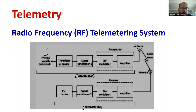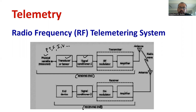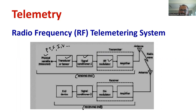Here we can see the physical variable — it may be pressure, temperature, force, current, or voltage. These physical variables will be measured with the help of either a sensor or transducer. To improve the strength of the signal, we use a signal conditioning device. If required, you can store the data by using a data acquisition system. At the transmitter side, we can see a radio frequency modulator, and we can increase the strength of the signal by using a certain amplifier.